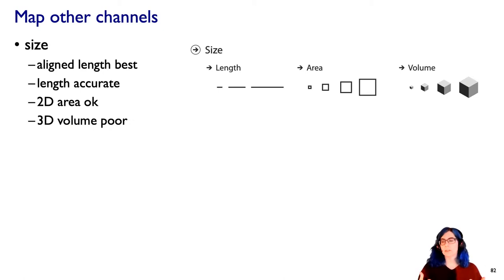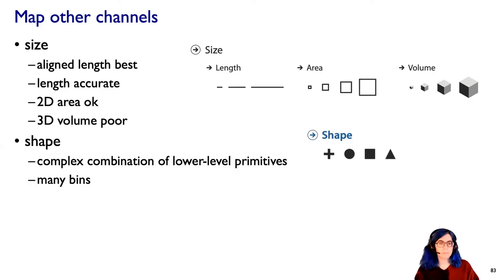Whereas with 2D area, there are fewer bins. In addition to having less accurate perception, there are fewer discriminable bins for area. Similarly, even as volume is something that we are much less accurately able to perceive, we can actually distinguish between fewer levels, fewer bins of this channel.